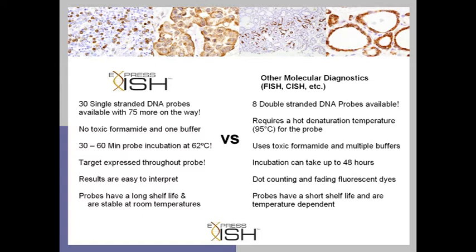On top of that, we talked earlier about using single-sided DNA strands versus double-sided DNA strands. All the other technologies or most of them use double-sided DNA. Why is that bad? Well first, you've got to use toxic formamide and a very hot denaturation temperature of 95 degrees centigrade in order to get that DNA strand, the double-sided DNA strand, to separate from itself.